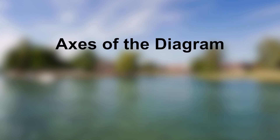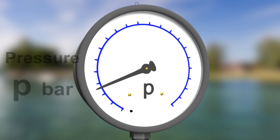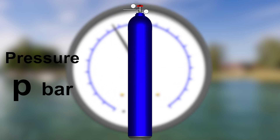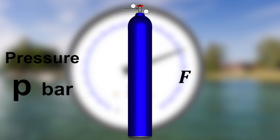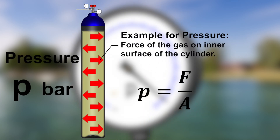The pressure enthalpy diagram shows the absolute pressure p on one axis and the specific enthalpy h on the other axis. The absolute pressure p in a fluid is the force per area the fluid exerts on a wall or on adjacent parts of a fluid.